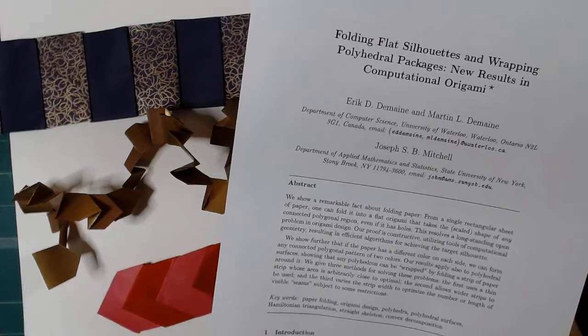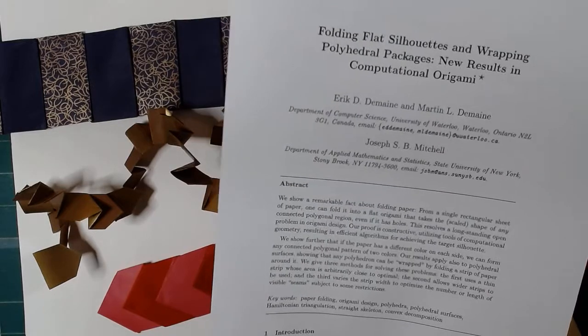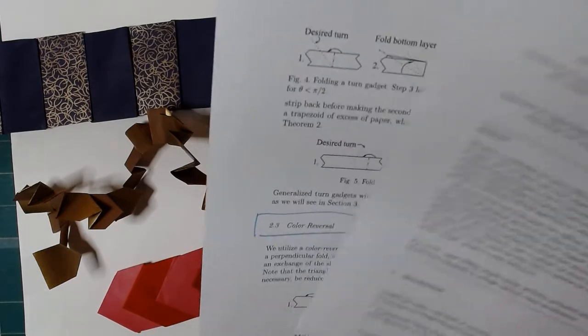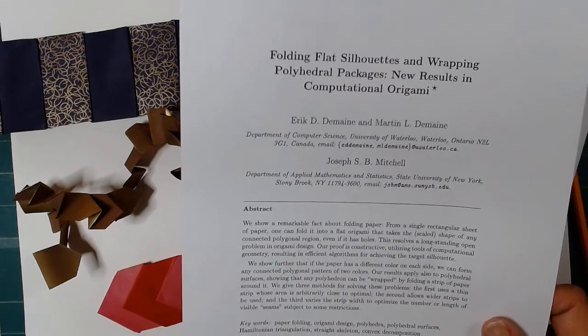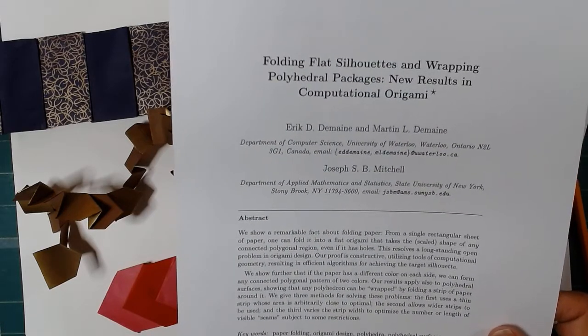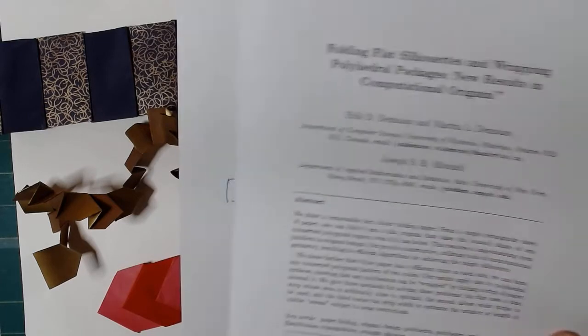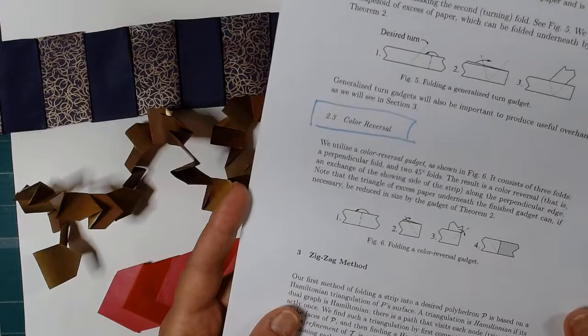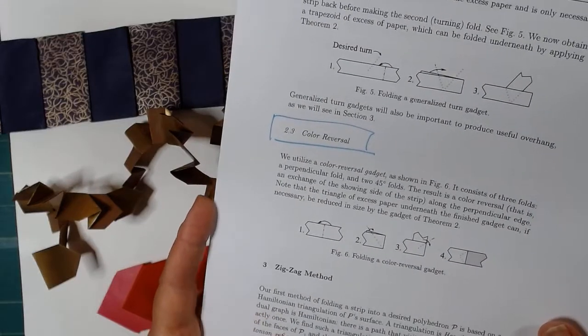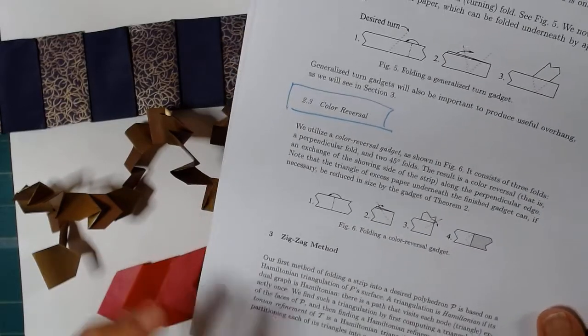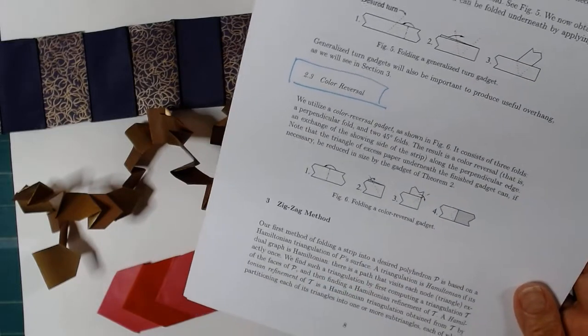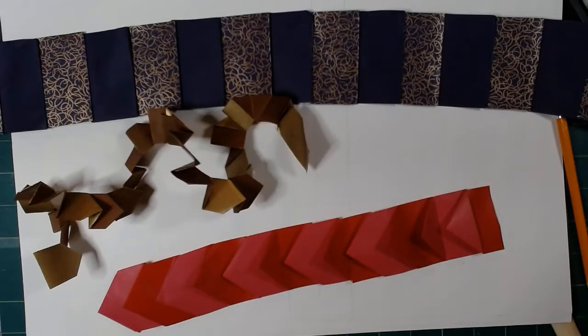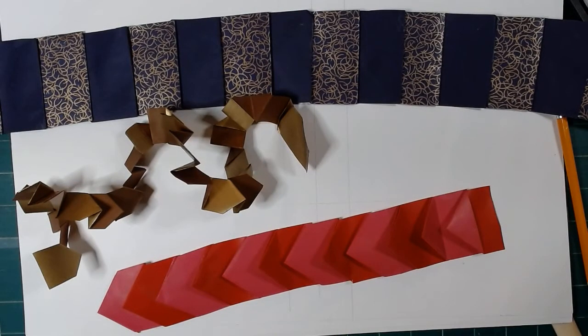I came across this cool method of folding that I thought would be worth sharing. It's in this paper about folding flat silhouettes and wrapping polyhedra packages, and the authors call this a color reversal gadget. They show a diagram here and I wondered what it would be like if I repeated that over and over again, and lots of interesting things happen.